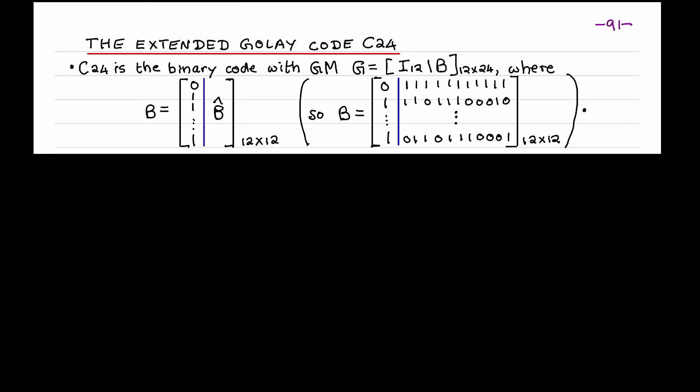I'll next describe the extended Golay code C24. C24 is an extension of C23 in the following sense. A generator matrix for C24 is this matrix G in standard form. It's a 12 by 24 matrix. And its right-half is the 12 by 12 matrix B, obtained from B-hat by appending this column to its left. The column has a zero in its first position, followed by 11 ones. We see that the first row of B has weight 11, and the other 11 rows of B each has weight 7. And so the first row of G has weight 12, and the other rows of G have weight 8. Hence, all the rows of G have even weight.